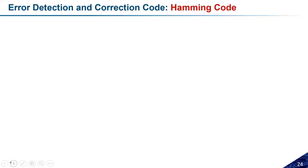The well-known error detection and correction code is the Hamming code. Most of these codes you will go through again when you take a course related to data communication or computer networks. That is why I am going through this quickly so that you can understand how it is working. The Hamming code is one code that can detect as well as correct the error.